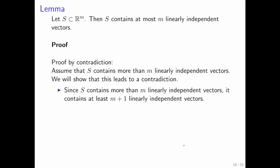Since it contains more than m linearly independent vectors, we know that it contains at least m plus 1 linearly independent vectors. Let's label these vectors v_0 through v_m, and let's make those into the columns of matrix V.